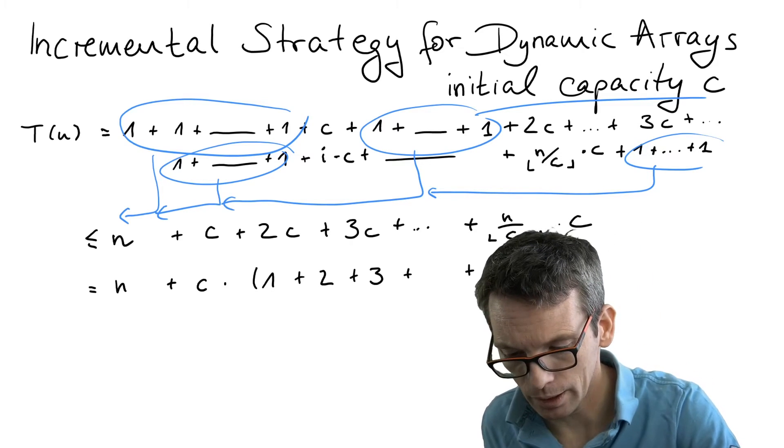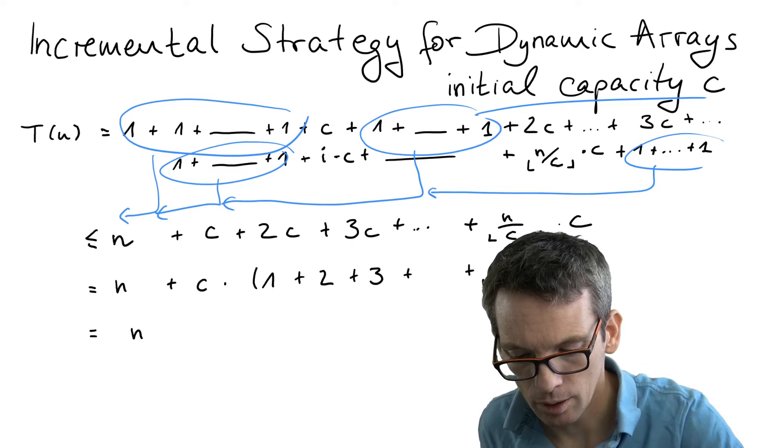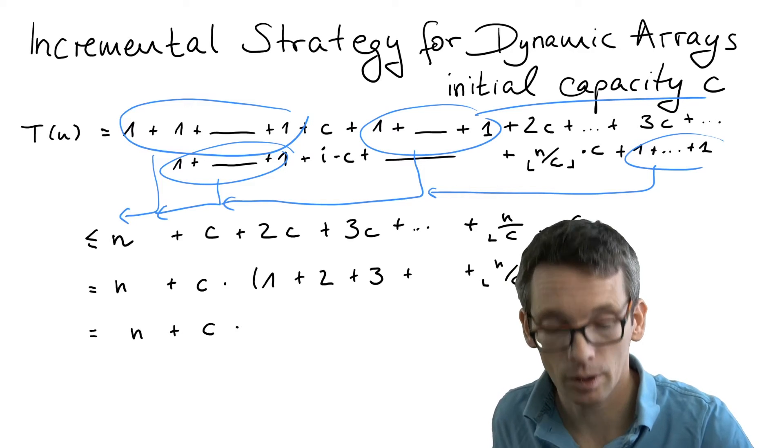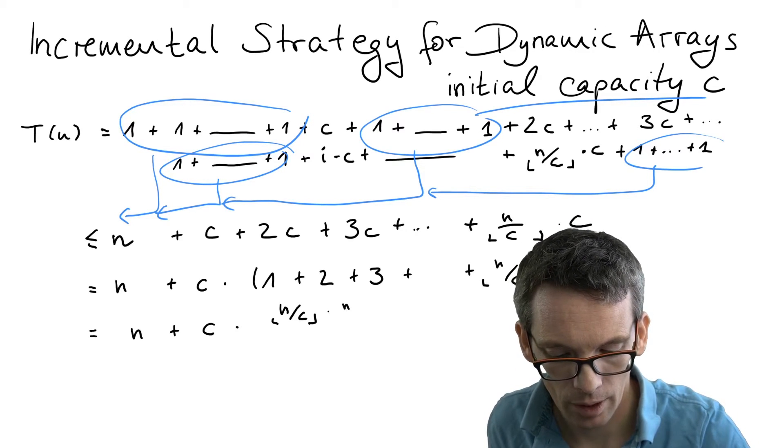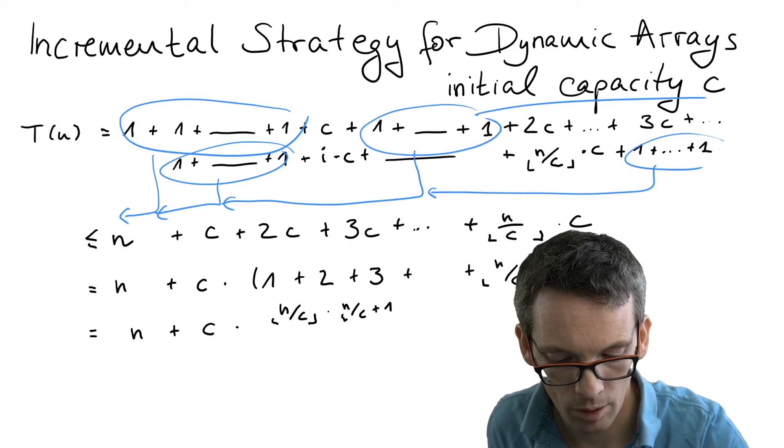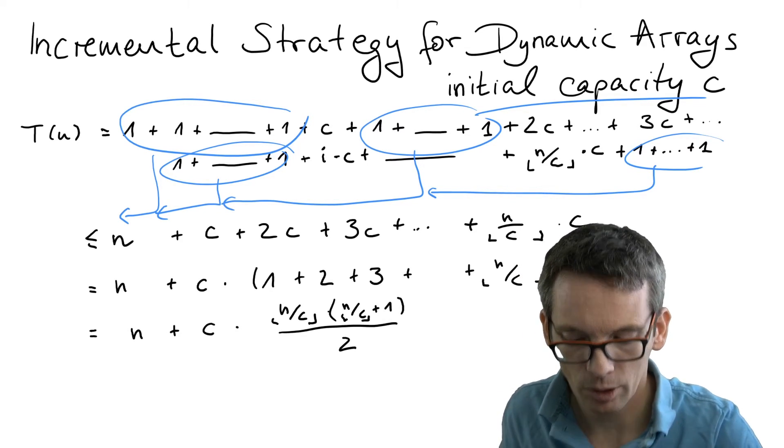So what we get is n plus c times (n divided by c) times (n divided by c plus 1) divided by 2.